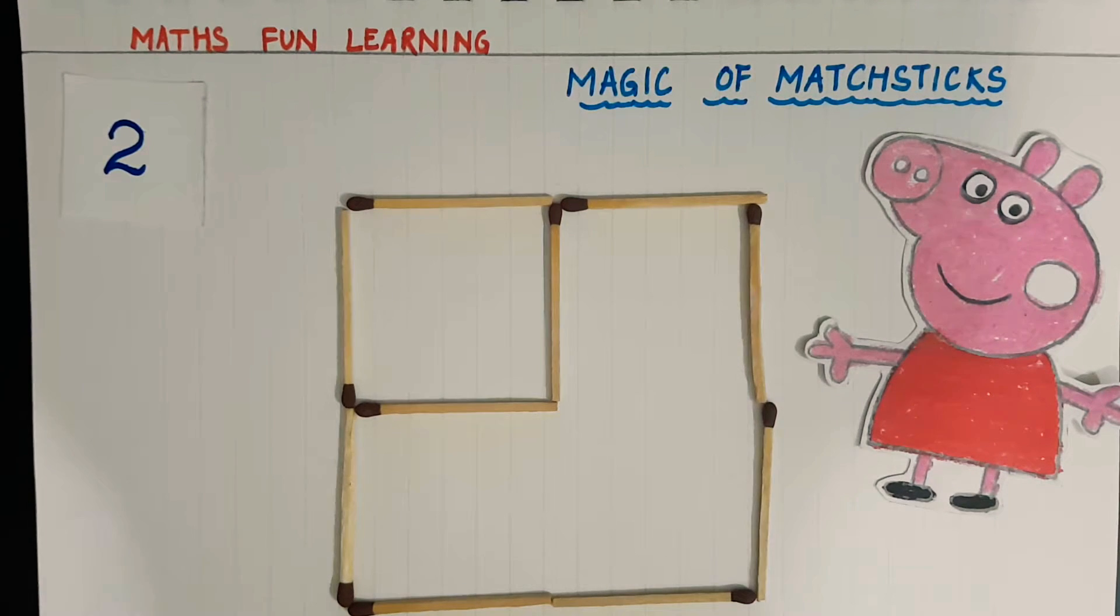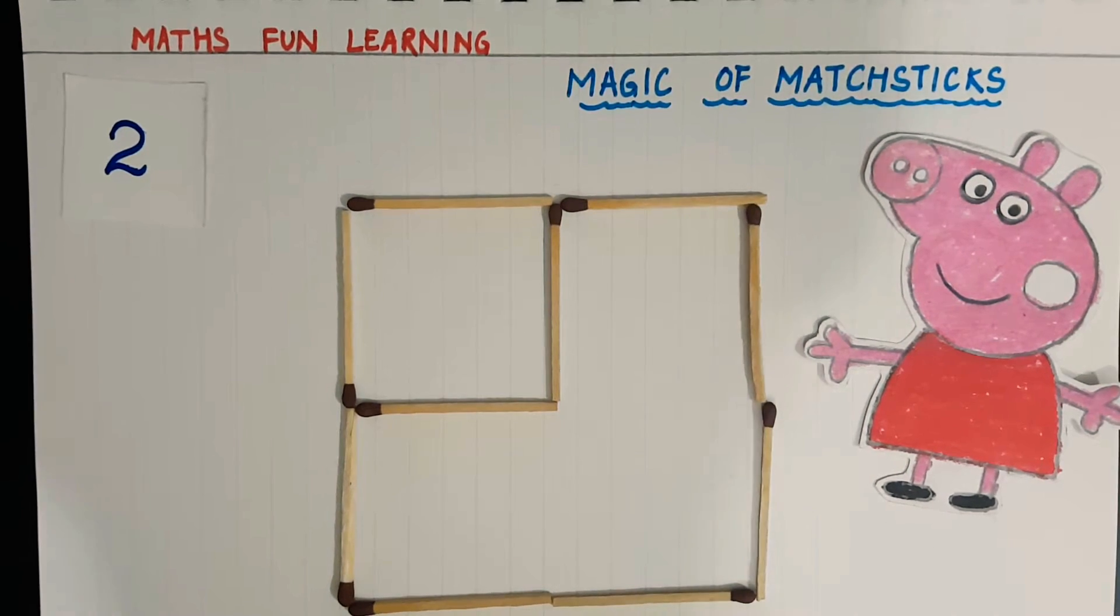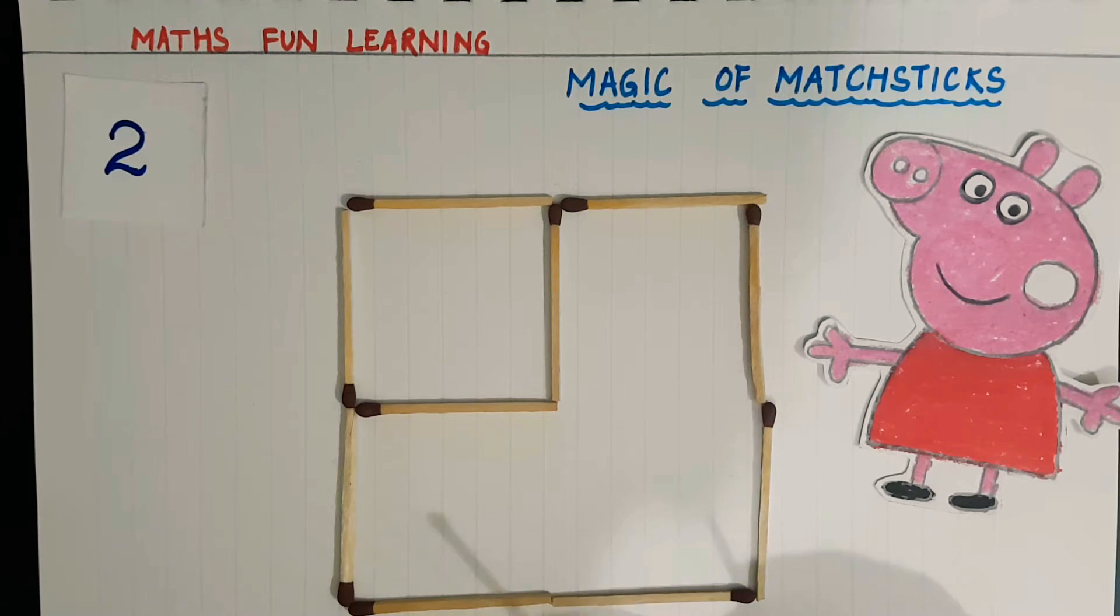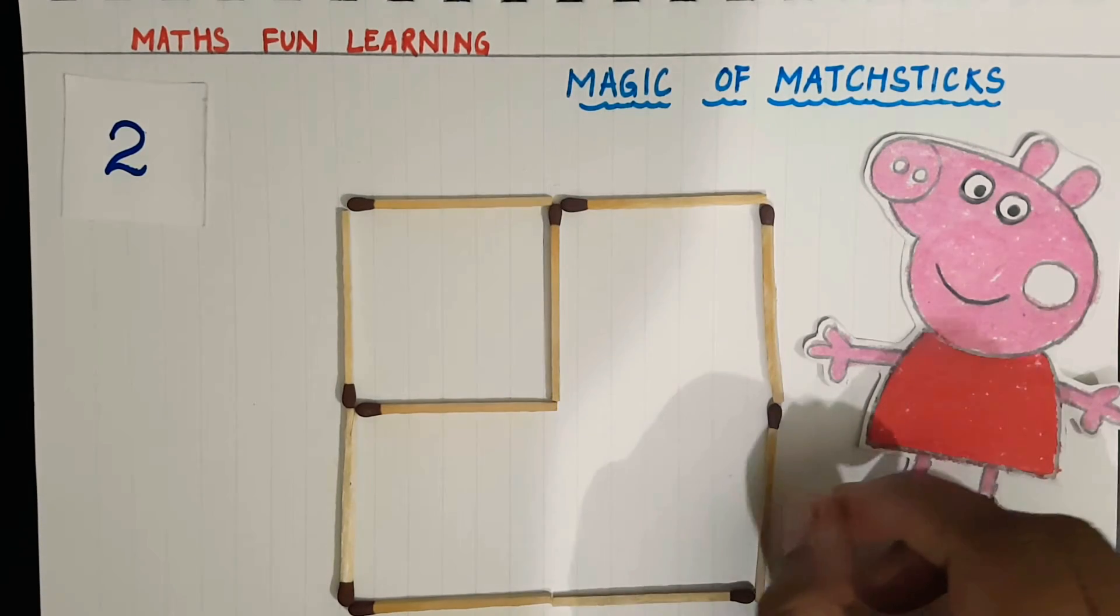You can see a big square on my screen and one small square inside the big square. So my next question is add one matchstick to make three squares. Only one matchstick, yes. I have to change this square into three squares. How, kids? Yes, think about the answer.